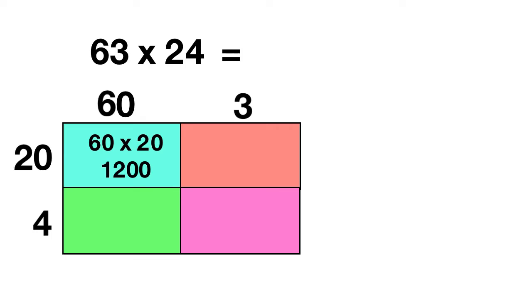Then we can keep going. Next, you can multiply 3 times 20 in this pink box. To multiply 3 times 20, you do 3 times 2, which is 6. And then you add one zero, 60.